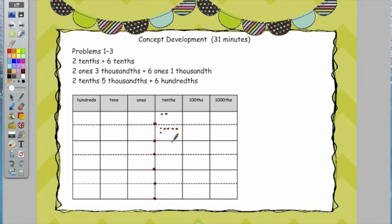Am I adding tenths plus tenths? That's the first thing I need to look at. So if I'm adding 2 apples plus 6 apples, what am I going to have? 8 apples. But instead I'm going to write 8 tenths. The apples just sort of help us think about it. Now I want you to rewrite it in standard form with the decimal. So how will I write 8 tenths? 0.8.